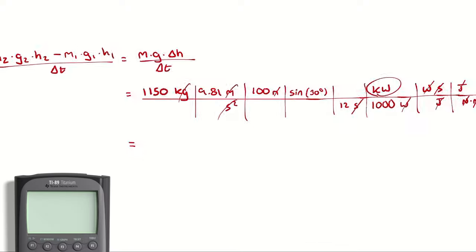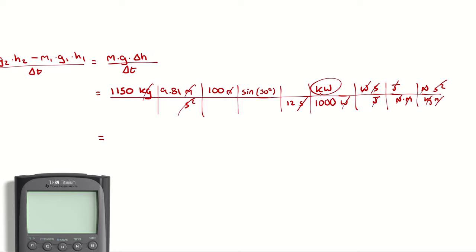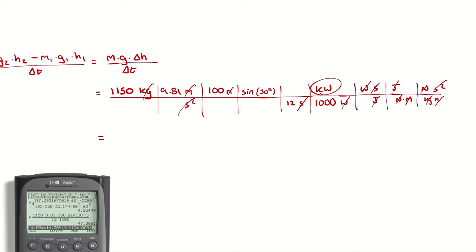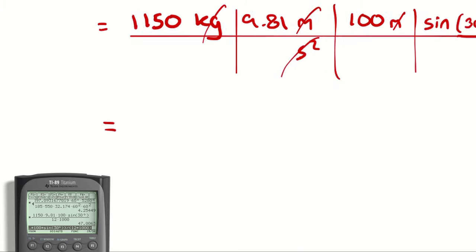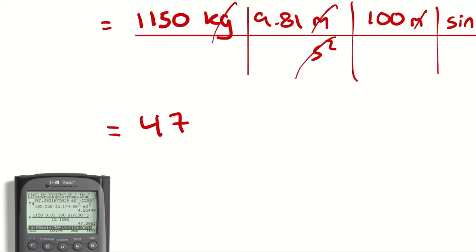Calculating: 1,150 times 9.81 times 100 times sine of 30 degrees, divided by 12, divided by 1,000, gives an answer of approximately 47 kilowatts. So it takes about 47 kilowatts on average to accomplish this process — that is the rate of energy entering the system for part A.